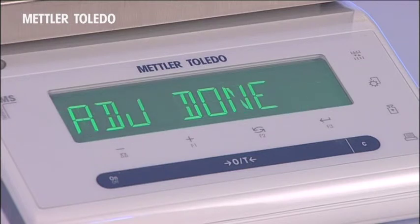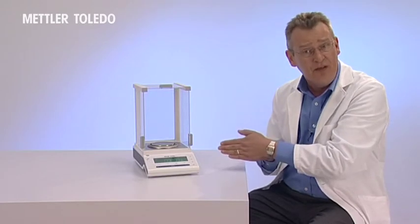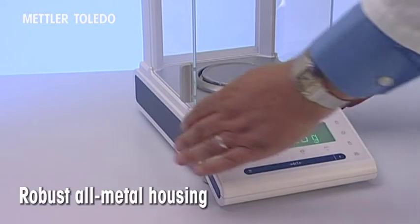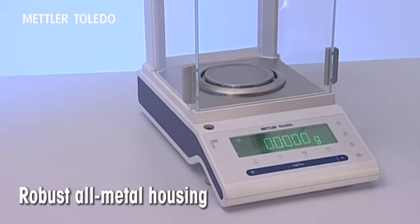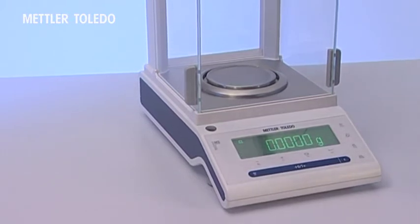For added security you can even configure FACT to initiate a self adjustment at a specific time of day. The robust metal housing considerably reduces the effects of electromagnetic interference from other equipment that may perhaps affect weighing results.